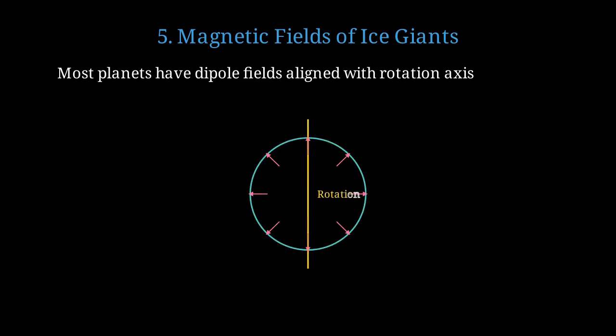Here's a normal planetary magnetic field. The field lines emerge from the poles, aligned with the planet's rotation axis.